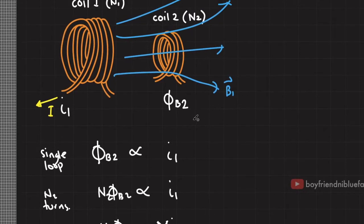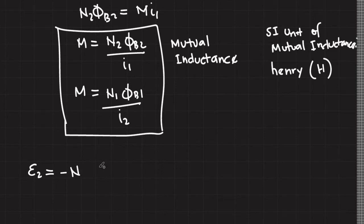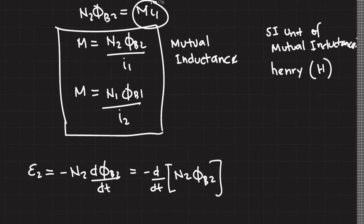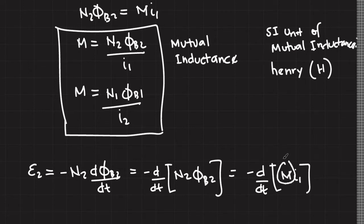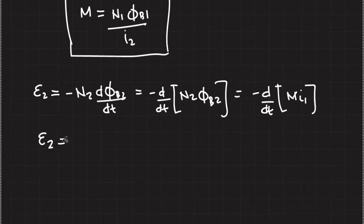The EMF induced on coil 2, represented as E_sub_2, using Faraday's law is equal to negative N_sub_2 times the time derivative of the flux on coil 2. Rearranging and placing N_sub_2 beside the flux, this term looks familiar — we can replace N_sub_2 times phi_B2 with M times I_sub_1. Since M is a constant we can bring it outside the derivative. So the induced EMF on coil 2 is negative M times dI_sub_1 over dt.